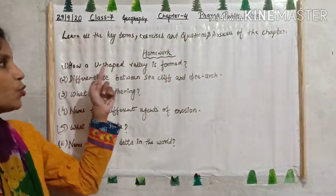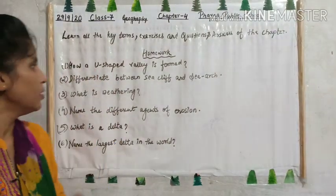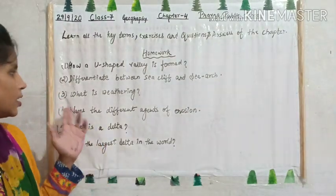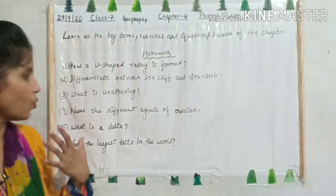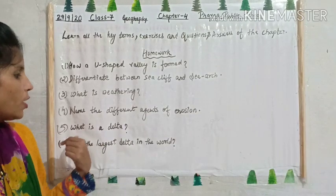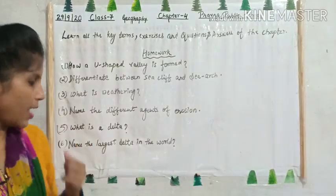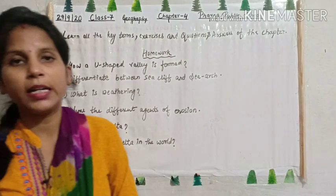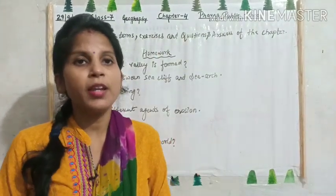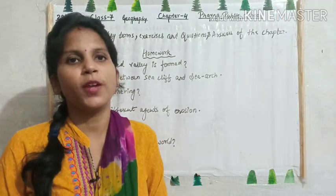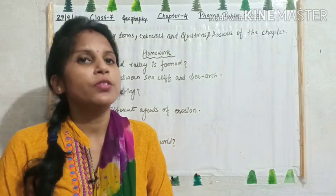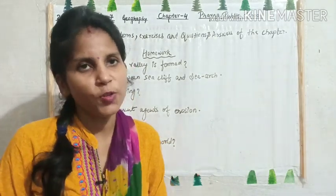Your homework questions are: Question 1 — How is a U-shaped valley formed? Question 2 — Differentiate between sea cliff and sea arc. Question 3 — What is weathering? Question 4 — Name the different agents of erosion. Question 5 — What is a delta? Question 6 — Name the largest delta in the world. I request you to please watch my video completely so that you can get thorough knowledge of the chapter. Thank you, class.